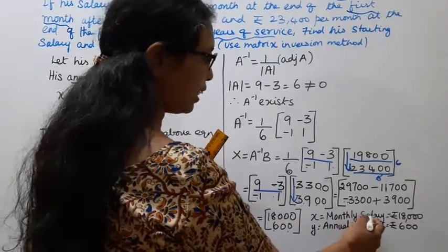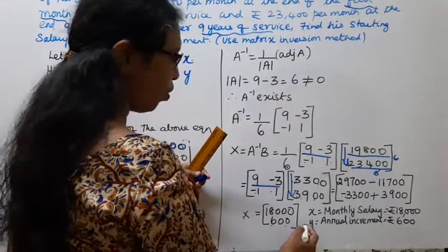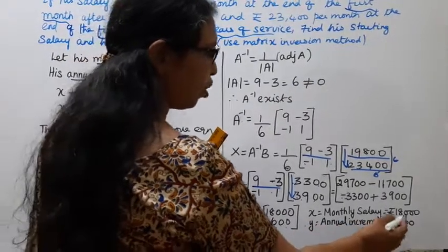X is monthly salary: 18,000. Y is annual increment: 600.